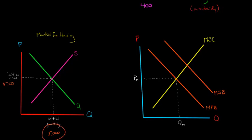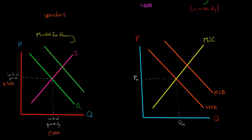So if we have an initial quantity of 5,000 and an initial price of $700, and we introduce these vouchers, vouchers are going to make it easier for more people to obtain housing. That's the goal — we want people who before couldn't afford housing, maybe they're homeless or doubled up living with relatives, to be able to get housing, increasing the demand for housing. Here's our new demand curve, D2 — we're shifting from D1 outward to D2.